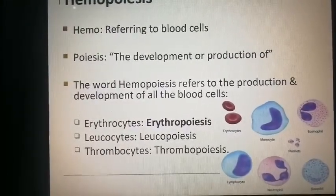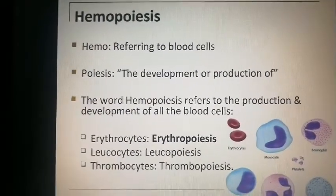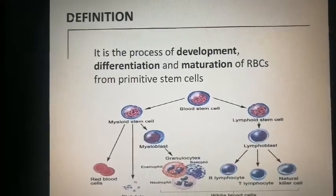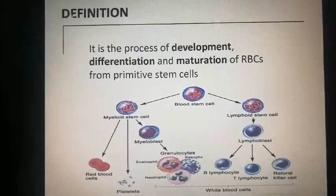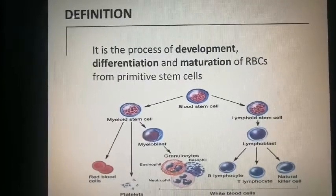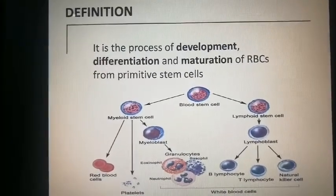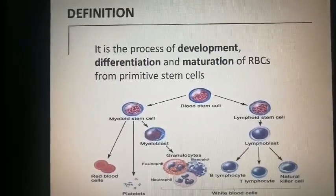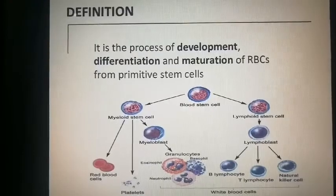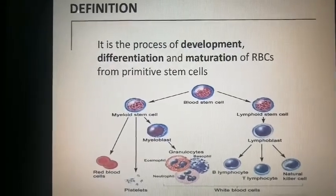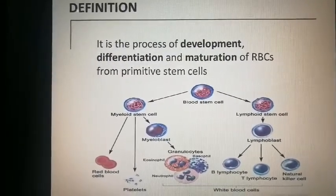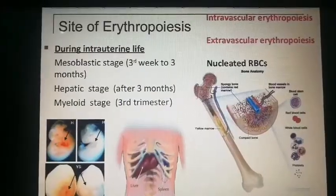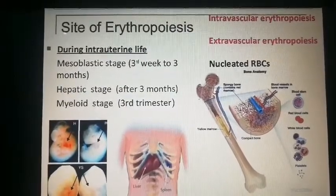Erythropoiesis is defined as the process of development, differentiation, and maturation of red blood cells from primitive stem cells.